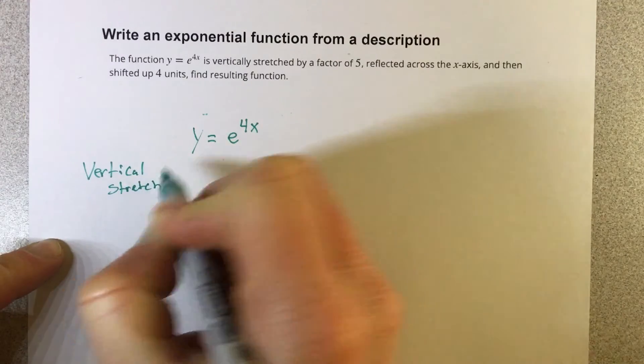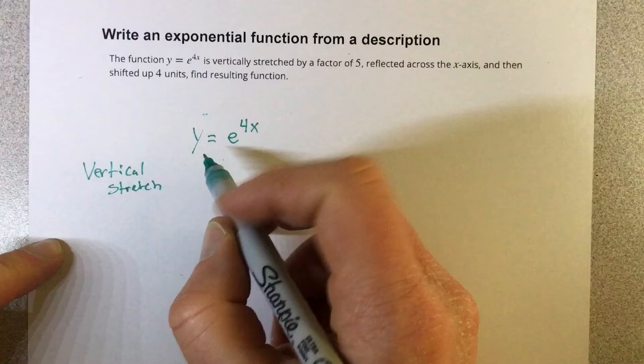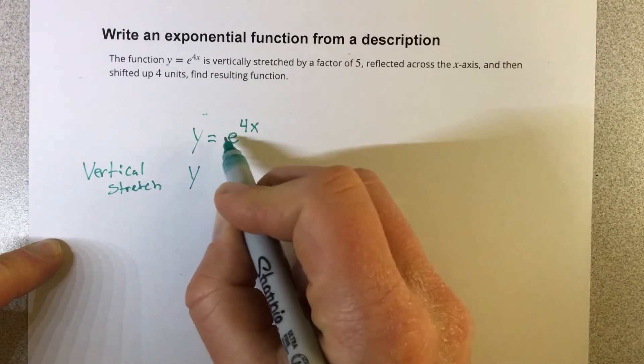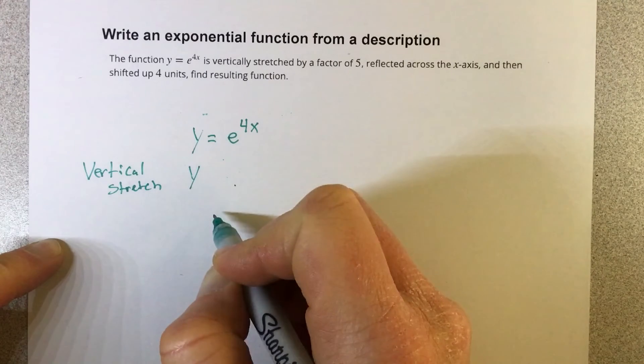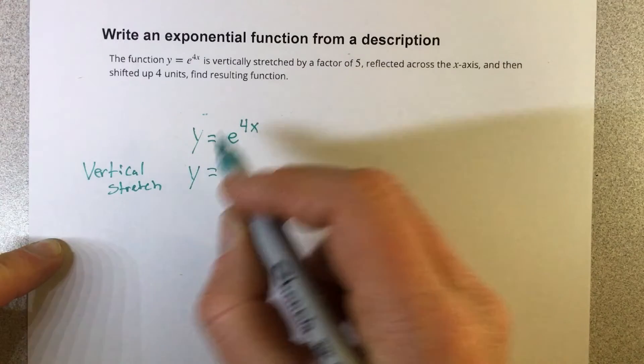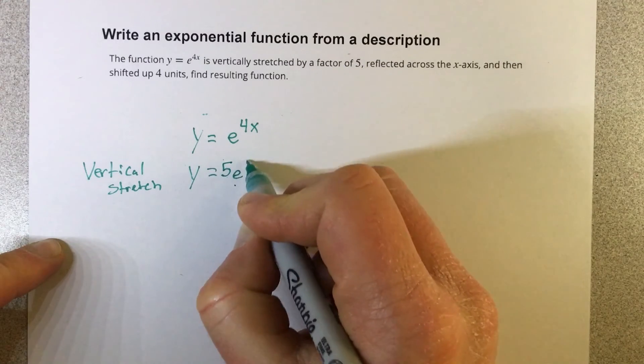If I'm going to have a vertical stretch, I need to multiply to the front of this function a factor of 5. So I get 5e to the 4x.